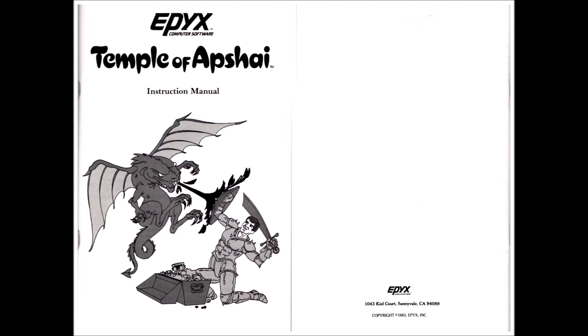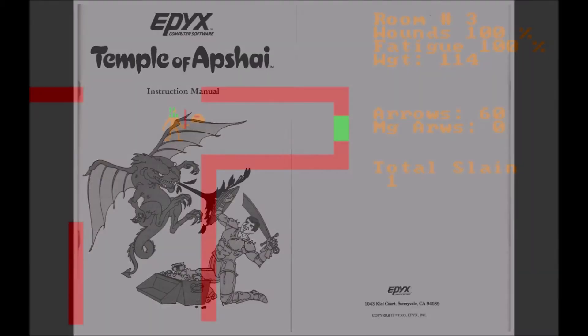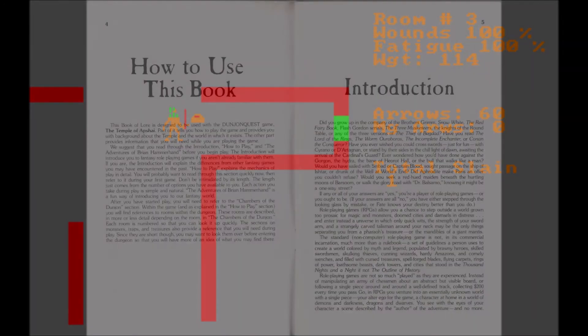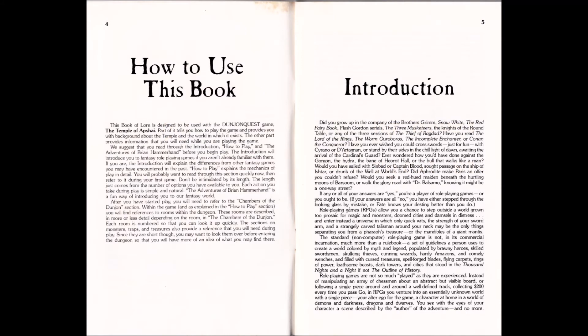Wie wir hier am Beispiel von Temple of Abschai sehen, das 1983 auf den Markt kam – eines der wirklich sehr frühen Computerspiele – war dieses Handbuch eine dringende Notwendigkeit. Einfach deswegen, weil die Technik, die grafische Oberfläche, einfach all die vielen Informationen, die man besonders im Rollenspiel benötigt – Charakterbeschreibung, Beschreibung der Schätze, Gegenstandsbeschreibung, Gegnerbeschreibung und so weiter – technisch nicht untergebracht werden konnten. Und das hat man wirklich alles in diesem Buch geschrieben. Da war es dann so: der Einstieg, wie man dieses Buch zu benutzen hat, und nochmal eine Beschreibung, was überhaupt ein Rollenspiel ist und auf was man sich einlässt.